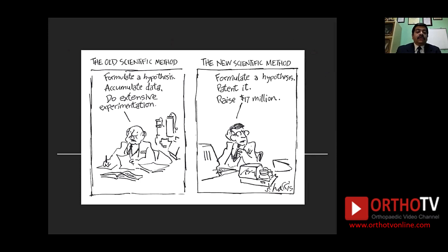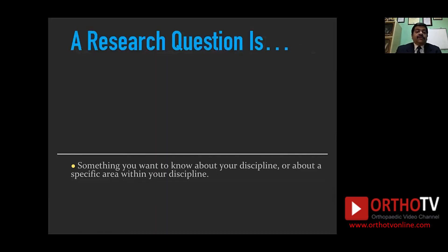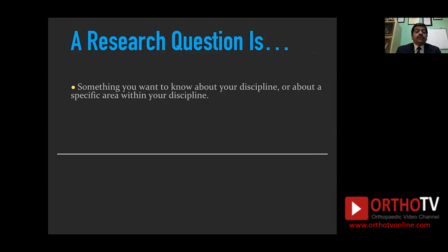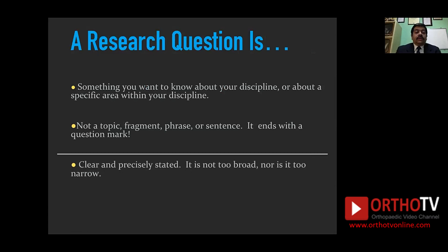If you start right — and how do you start right — all research questions are at the end of the day generated from a problem you're facing during your clinical practice. If it is to find a solution to that problem, it always adds new knowledge to the literature. Scientific writing methodology has become structured over the years, and if we follow certain rules we would be more useful in contributing to this literature. A research question is something you want to know about your discipline or a specific area within it — not a topic, fragment, phrase, or sentence. It ends with a question mark, is clear and precisely stated, and is not so broad or so narrow that it can be answered with a simple yes or no.